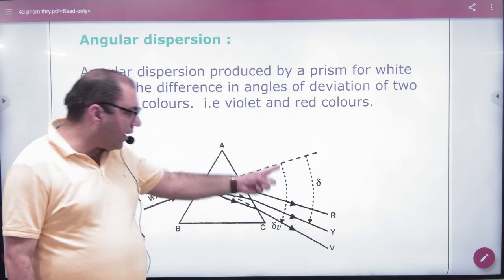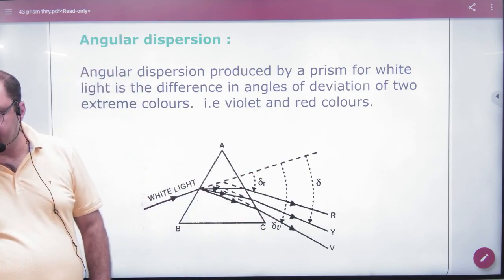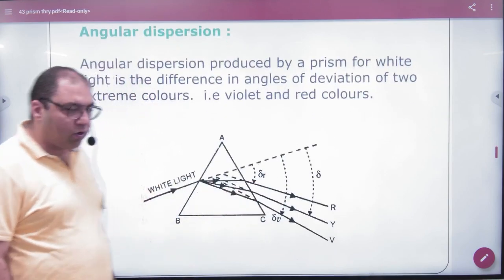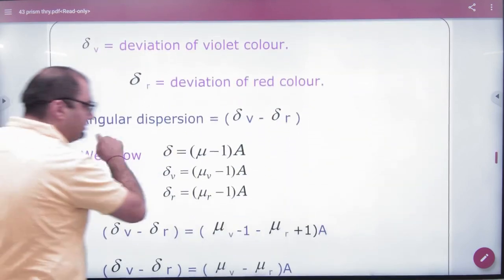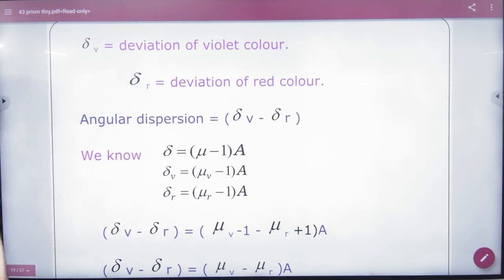So if I ask maximum angle, then violet will come. Minimum deviation will be red, and if I ask the difference, it's angular dispersion. Note that.